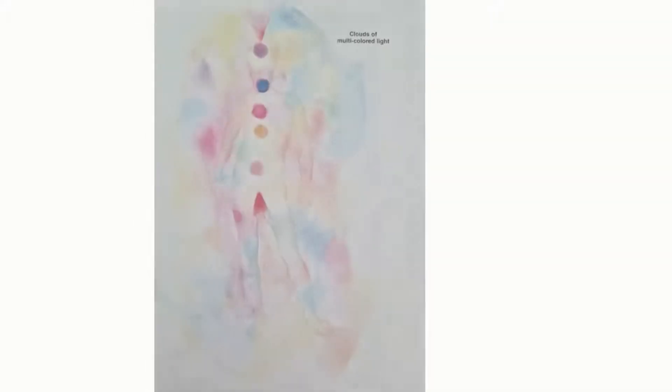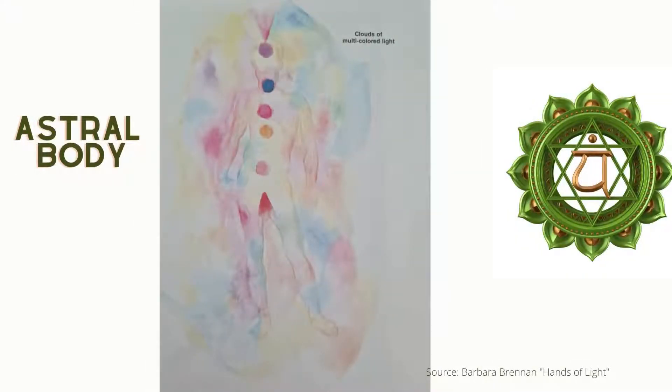The auric layer associated with this chakra is called the astral body. The astral body is the integration layer between the higher spiritual bodies and the lower physical bodies, which include the etheric, emotional and the mental layers. The astral body is amorphous and composed of clouds of similar but more vibrant colors than the emotional body, and is infused with the rose light of love.